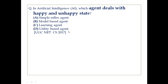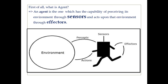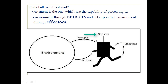Before answering this question, I think it will be helpful if I introduce the agent and its different types. So what is an agent? An agent is the one which has the capability of perceiving its environment via sensors and acts upon that environment via effectors. The agent collects information from the environment via sensors and based on this information it acts upon that environment via effectors. Sensors collect the information and effectors perform actions with respect to that information.